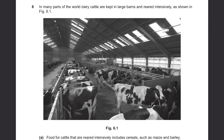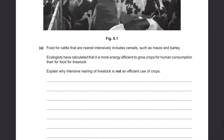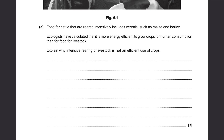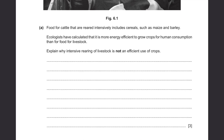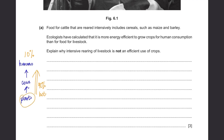Question 6. In many parts of the world, dairy cattle are kept in large barns and reared intensively as shown in Figure 6.1. Part A: Food for cattle reared intensively includes cereals such as maize and barley. Ecologists have calculated that it is more energy efficient to grow crops for human consumption than for food for livestock. Usually in the food chain we have plants at the bottom, then animals like cows, then humans on top. As you go along the food chain, you are losing a lot of energy — 90% of energy is lost, so humans are only getting 10%. Since energy is lost at each trophic level, it's much more efficient for crops to be directly consumed by humans instead of consuming cows which will have 90% less energy compared to plants.